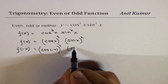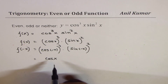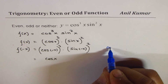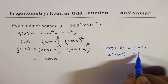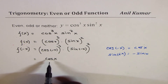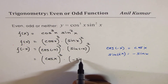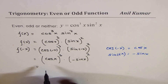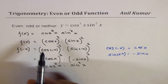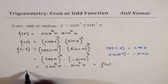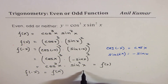Replacing x with -x gives f(-x) = (cos(-x))³ · (sin(-x))². We know cos(-x) = cos x, and sin(-x) = -sin x. Substituting: f(-x) = (cos x)³ · (-sin x)². When you square -sin x it becomes positive, so f(-x) = cos³x · sin²x, which is exactly f(x). Since f(-x) = f(x), the function is an even function.